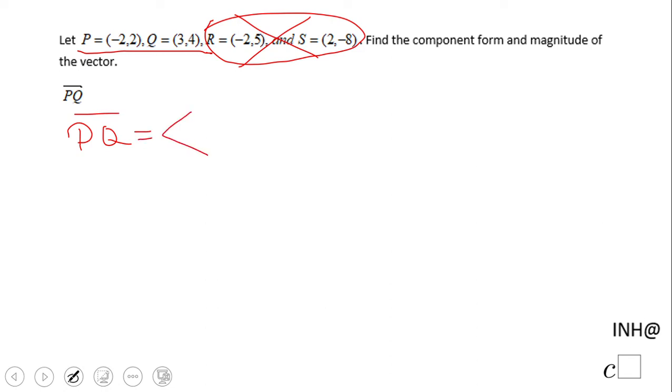Very simple. We're going to do x2 minus x1. But first of all, let's mark them like this. So we're going to have 3 minus negative 2, comma 4 minus 2. We can simplify this form, and that will be 3 minus negative 2, that is 5. 4 minus 2 is 2. The component form of PQ is <5, 2>.